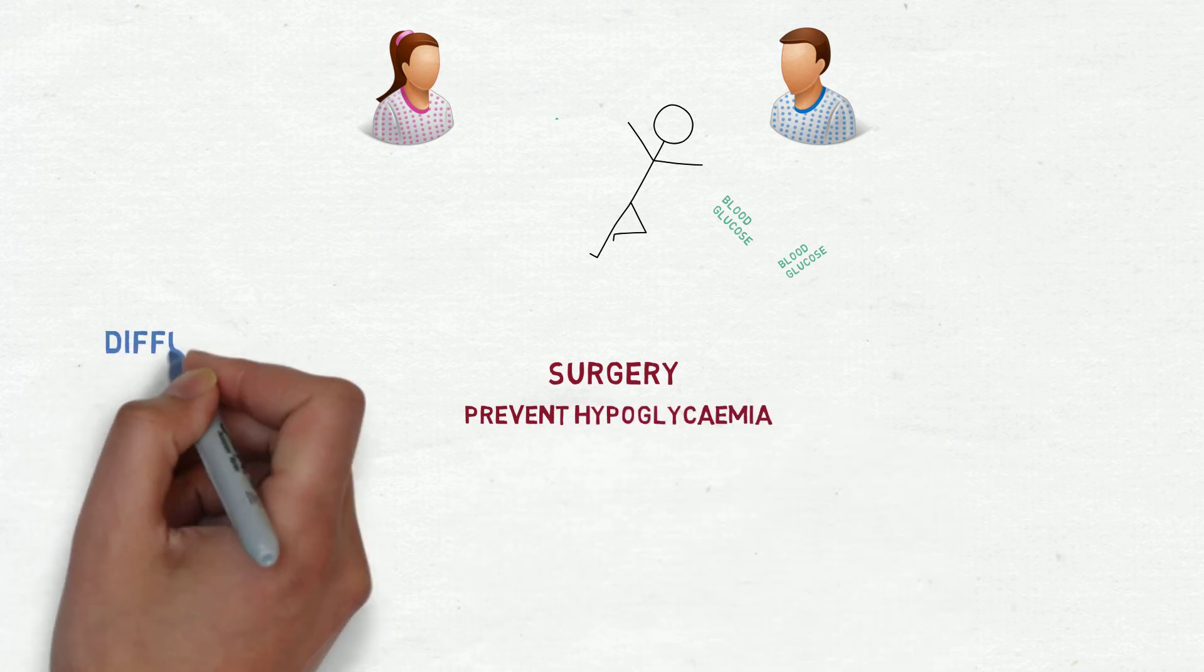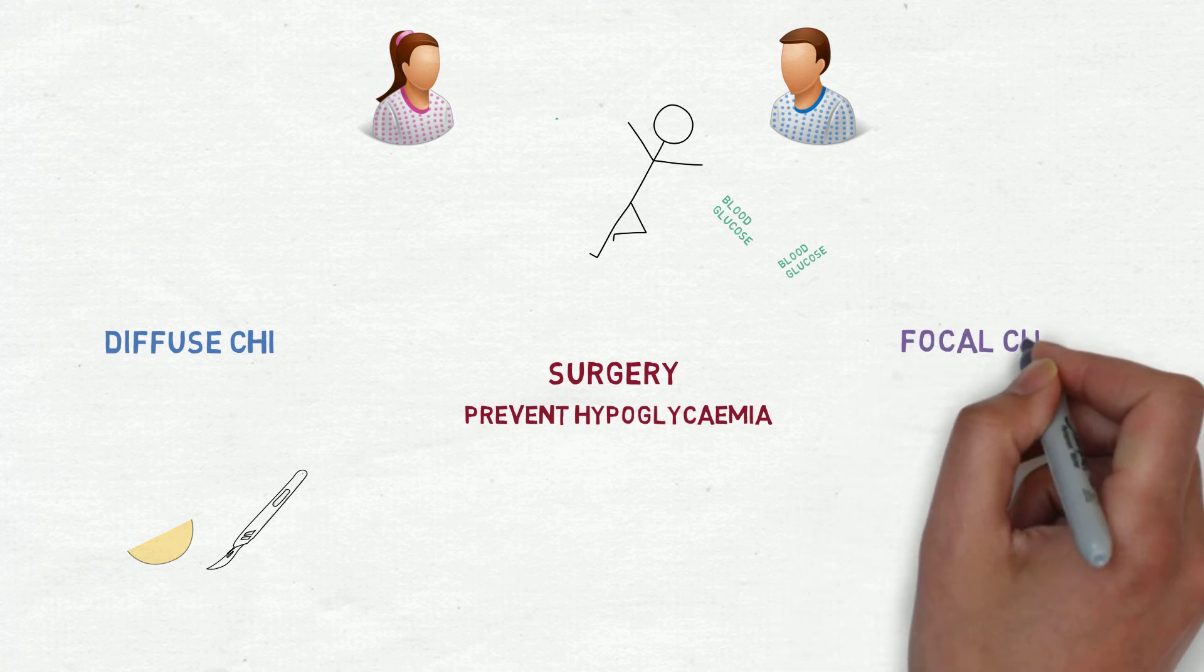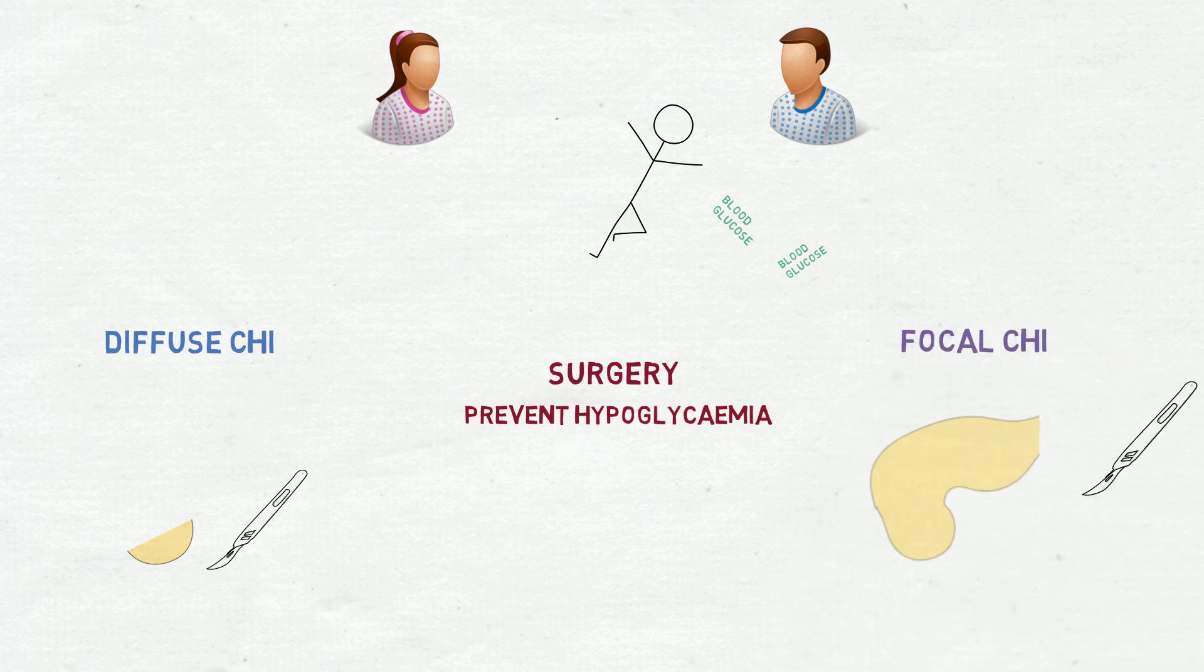Surgery for diffuse CHI involves removing nearly the whole pancreas, leaving just a small portion behind. In contrast, surgery for focal CHI only involves removing just the focus, leaving the rest of the pancreas in place.